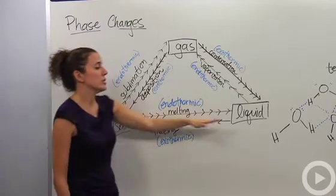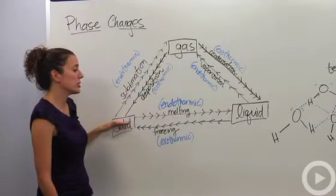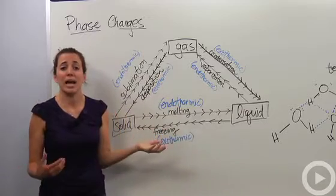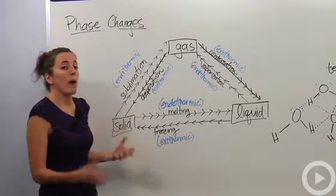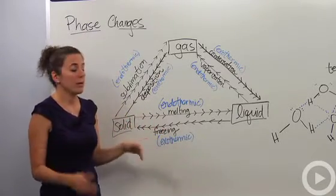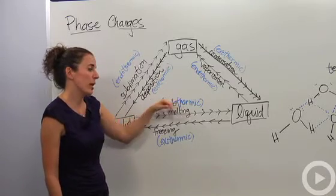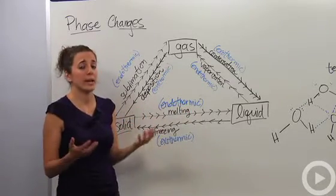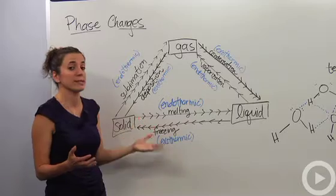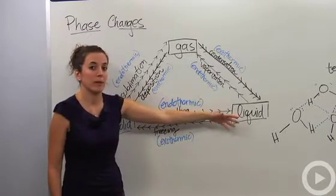If we're going to go from solid to a liquid, we're actually going to call that melting, which I know we've heard that word many times before, and that actually requires energy. We need heat to melt something, so we're going to call that an endothermic process, meaning that requires energy or requires heat for that reaction or that phase to occur.